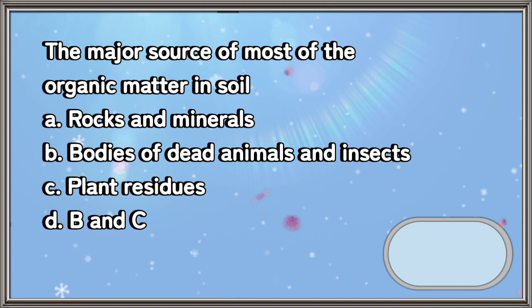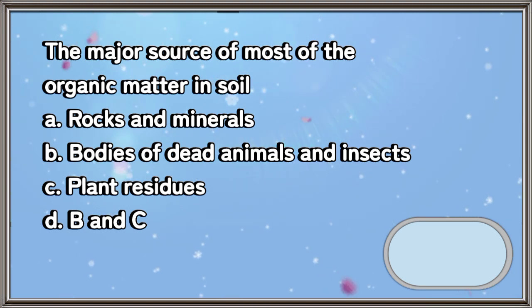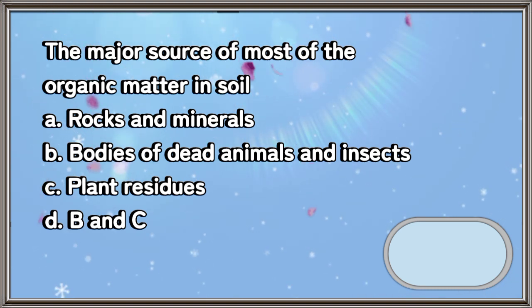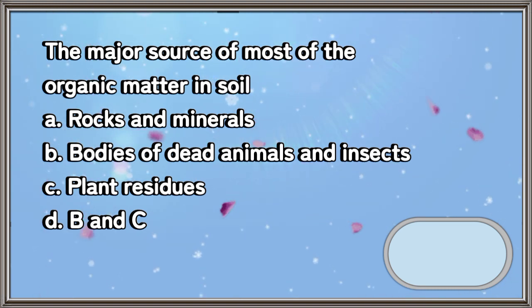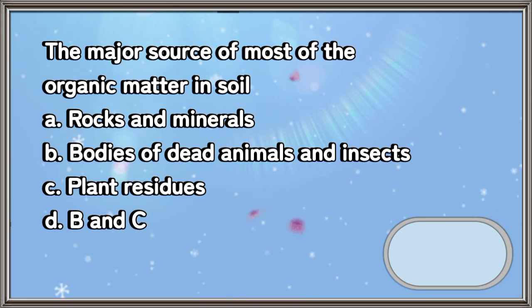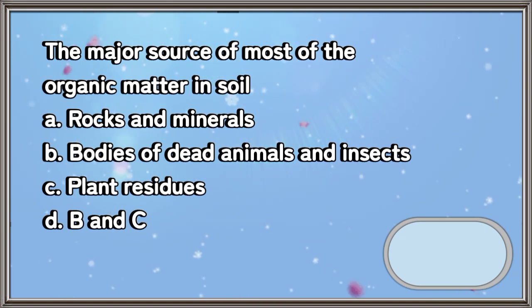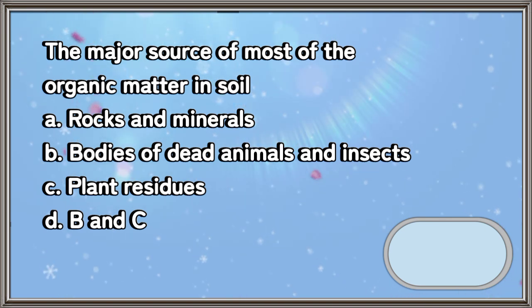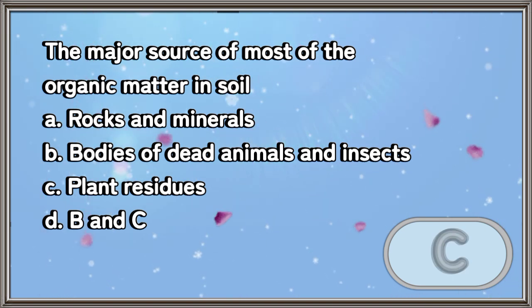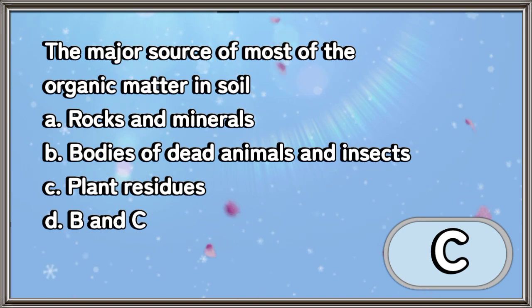The major source of most of the organic matter in soil: A. Rocks and minerals, B. Bodies of dead animals and insects, C. Plant residues, D. B and C. The answer is letter C.